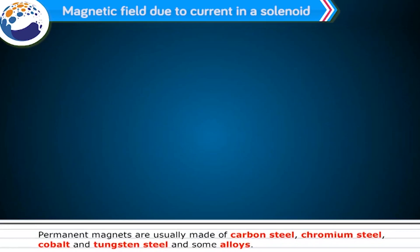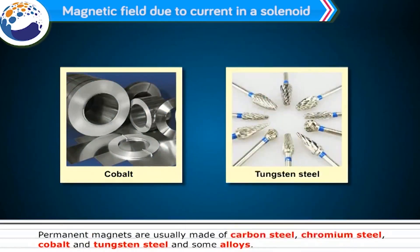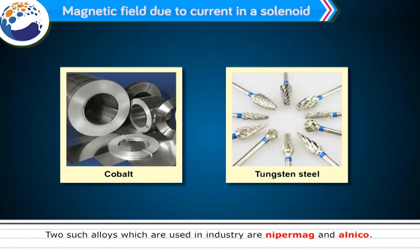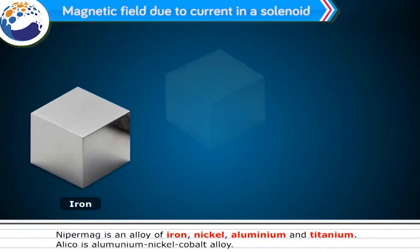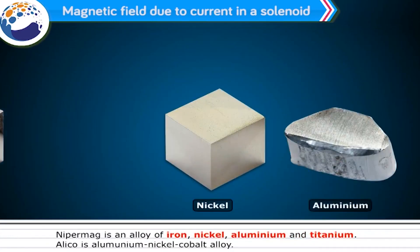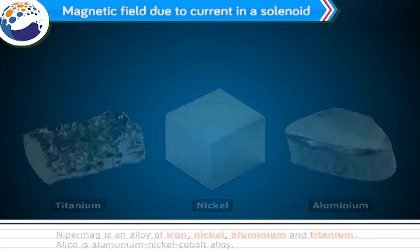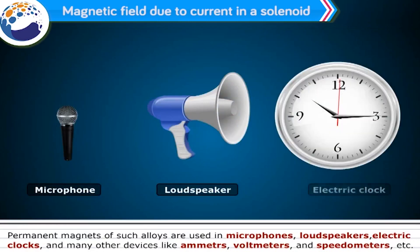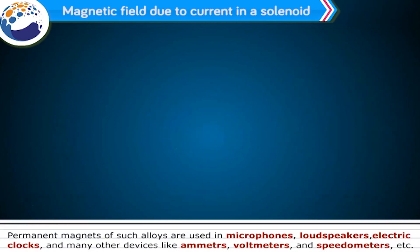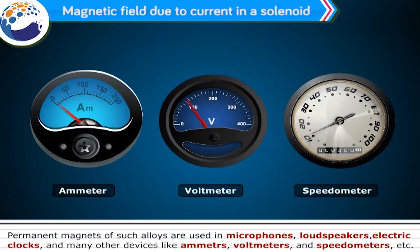Permanent magnets are usually made of carbon steel, chromium steel, cobalt, and tungsten steel and some alloys. Two such alloys which are used in industry are Nipamag and Alnico. Nipamag is an alloy of iron, nickel, aluminum, and titanium. Alnico is aluminum-nickel-cobalt alloy. Permanent magnets of such alloys are used in microphones, loudspeakers, electric clocks, and many other devices like ammeters, voltmeters, and speedometers, etc.